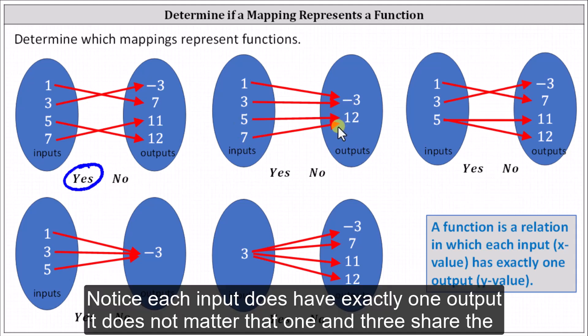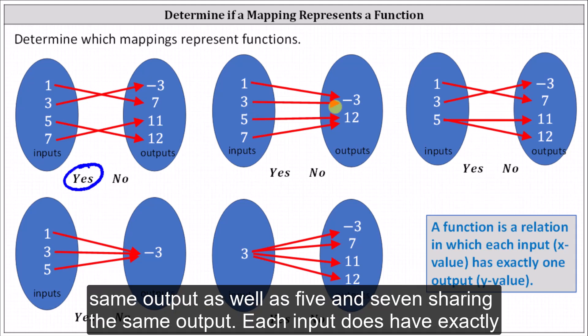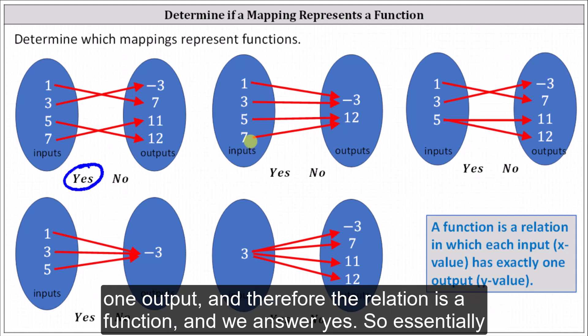Notice each input does have exactly one output. It does not matter that one and three share the same output, as well as five and seven sharing the same output. Each input does have exactly one output, and therefore the relation is a function, and we answer yes.